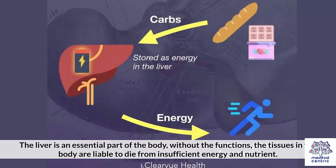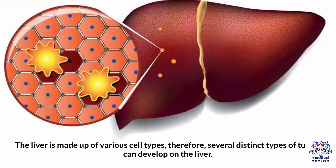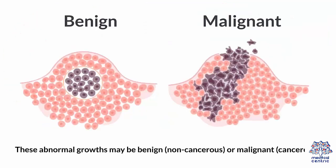Without its functions, the tissues in the body are liable to die from insufficient energy and nutrients. The liver is made up of various cell types, therefore several distinct types of tumor can develop on the liver. These abnormal growths may be benign, or non-cancerous, or malignant, meaning cancerous.